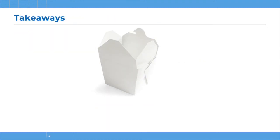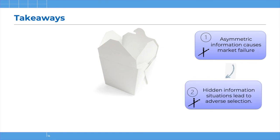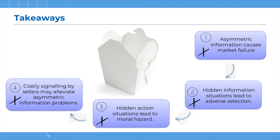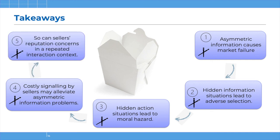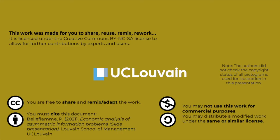Let me summarize. We have seen that asymmetric information causes market failure. There are two types of problems: hidden information situations that lead to adverse selection, and hidden action situations that lead to moral hazard. We have seen that costly signaling by sellers may alleviate asymmetric information problems, whereas reputation concerns can also alleviate these problems in a repeated interaction context. If you want to read more about this, you can read chapter 12 in our textbook. That's it for now. Thank you.